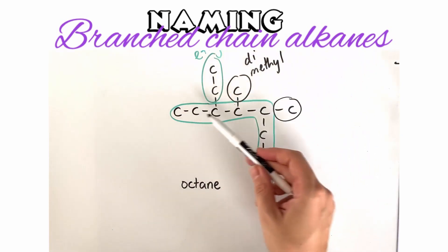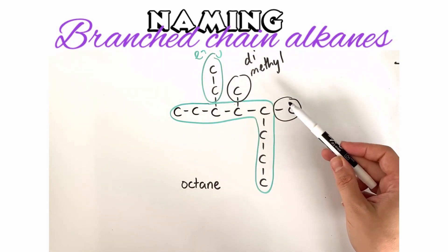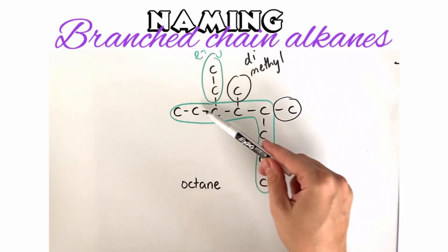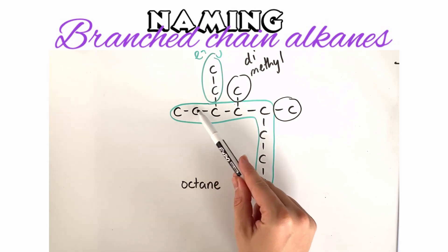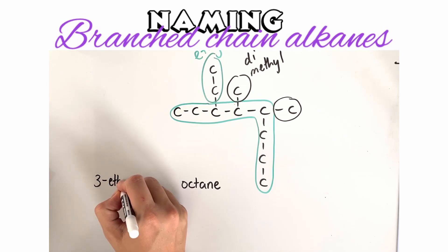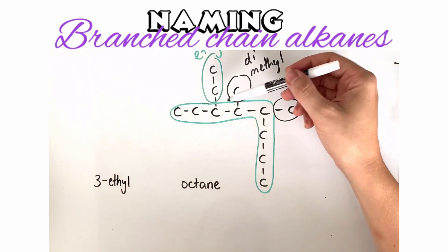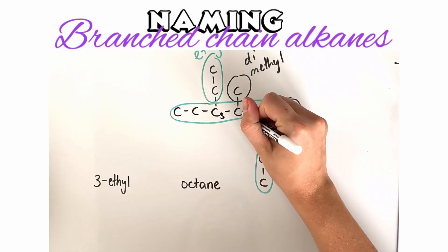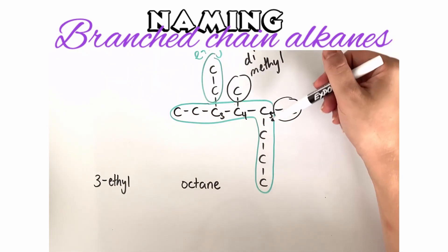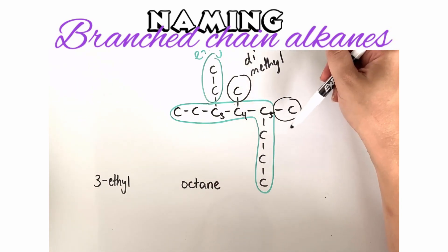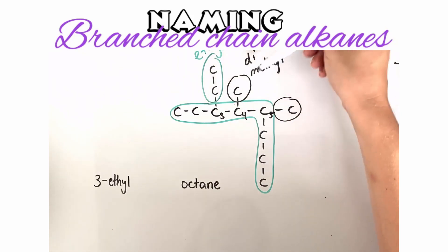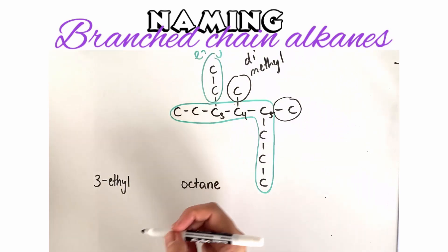Before writing the name, we need to work out which carbon atoms each branch sits on, giving them the smallest possible numbers. The ethyl group gets the smallest number — it sits on carbon three, numbering from this end: one, two, three. With carbon three established, we continue in the same direction: the methyl groups sit on carbon four and carbon five. Once you start numbering one way, you don't swap directions.